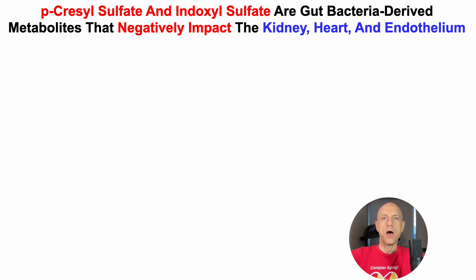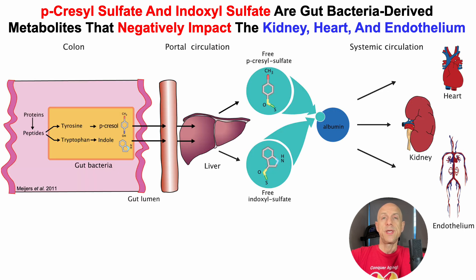P-cresyl sulfate and indoxyl sulfate are gut bacteria-derived metabolites that negatively impact the kidney, heart, and endothelium, and that's what we'll see here.